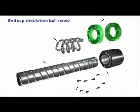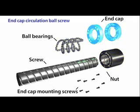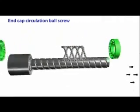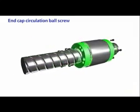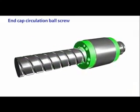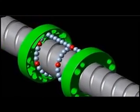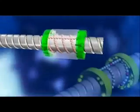End cap circulation ball screws are composed of a screw, nut, ball bearings, and end caps. The bearings remain between the screw and the nut, and the bearings return via a hole made through the end cap and the nut. Because this ball screw design causes the steel bearings to pass through the front and back sections of the nut, it is known as an end cap circulation ball screw.